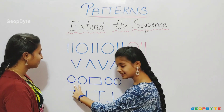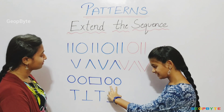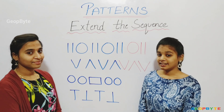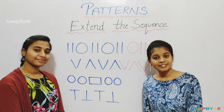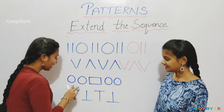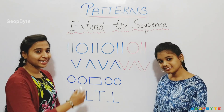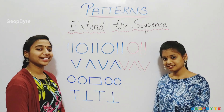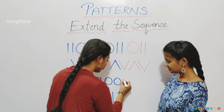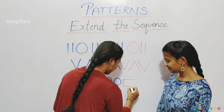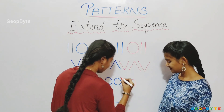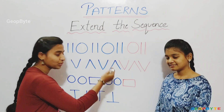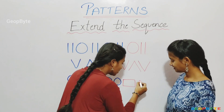Two circles, rectangle. Two circles, two circles. After two circles, which shape comes? Rectangle or two circles? Let us see. After two circles, we have a rectangle. So, after two circles, we get a rectangle. Again, after rectangle, we have two circles. Let us draw two circles.